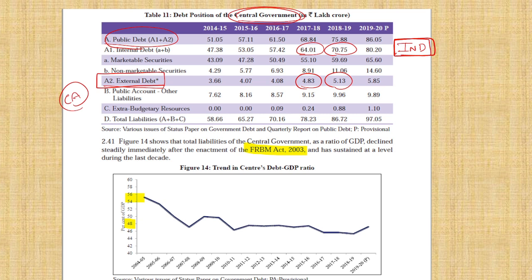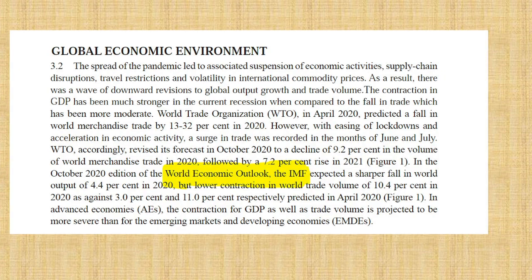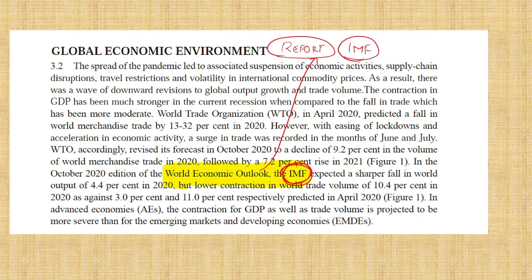In the preliminary examination, they will purposefully ask that our central government's debt is high in external — no, it is high in internal. And after the FRBM Act, our debt-to-GDP ratio is around 45%. This was asked in prelims — 45% debt-to-GDP ratio of the central government.